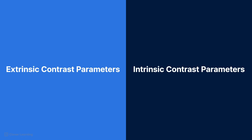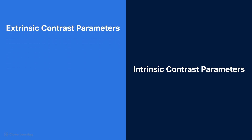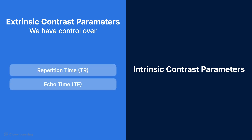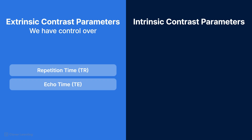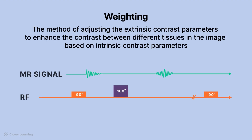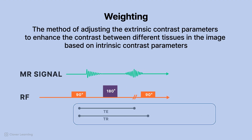Before we get to the definition of weighting, let's discuss extrinsic and intrinsic contrast parameters. Extrinsic contrast parameters are ones we have control over, including repetition time, TR, and echo time, TE. Intrinsic contrast parameters are ones we have no control over because they are inherent to the tissue, like the relaxation times of fat and water or the proton density of various tissues.